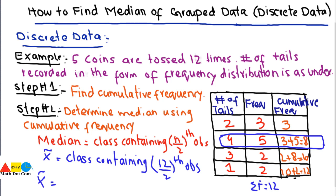The median of the given data will be 4, that is 4 number of tails. This is how you can find the median of the given data by using the formula.